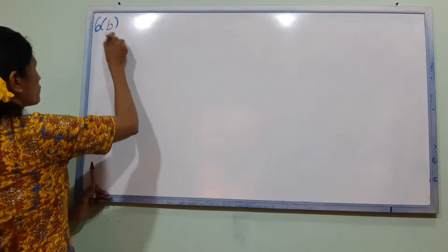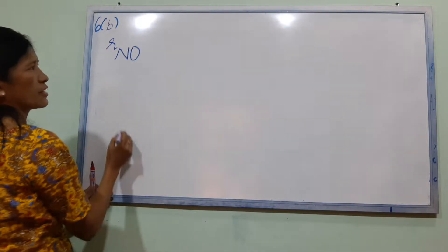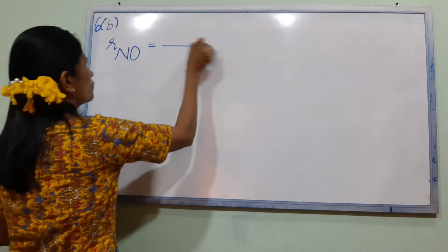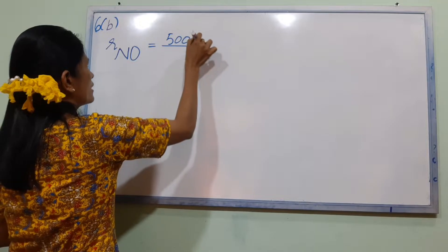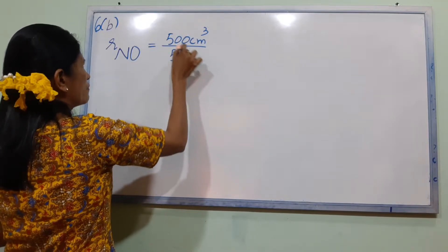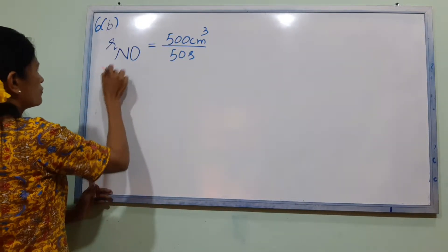Rate of diffusion of NO, nitrogen monoxide, is 500 cm³. Rate of diffusion is 50 cm³.